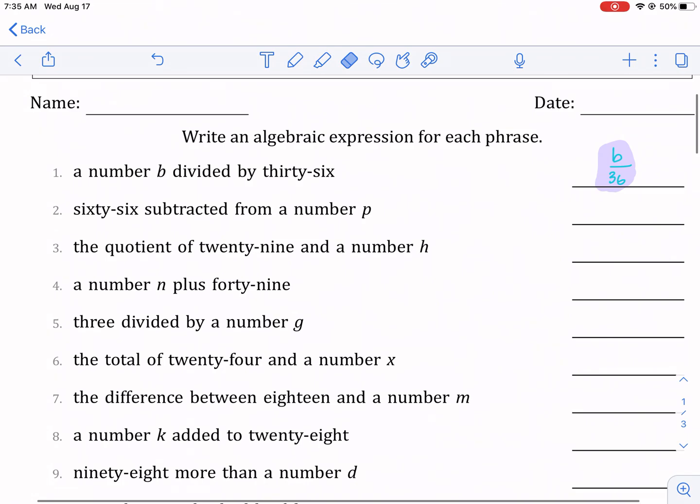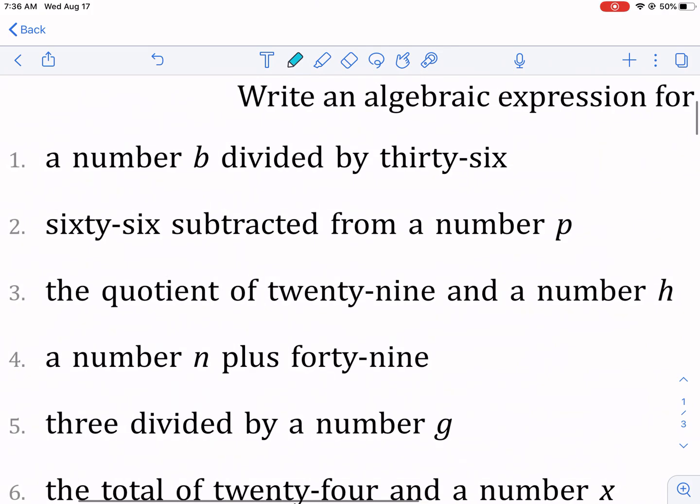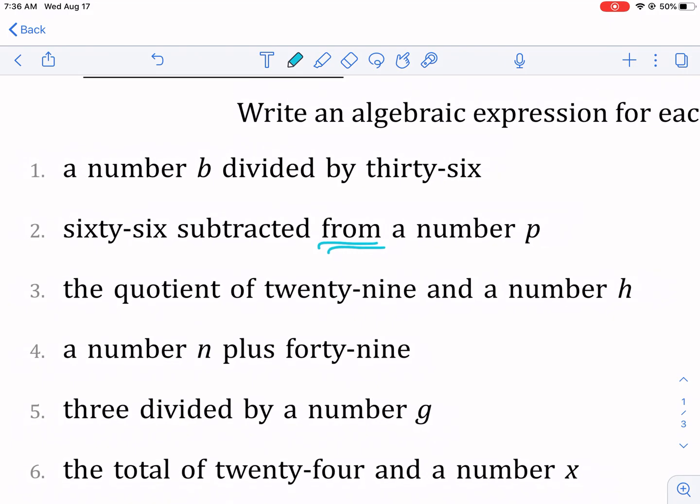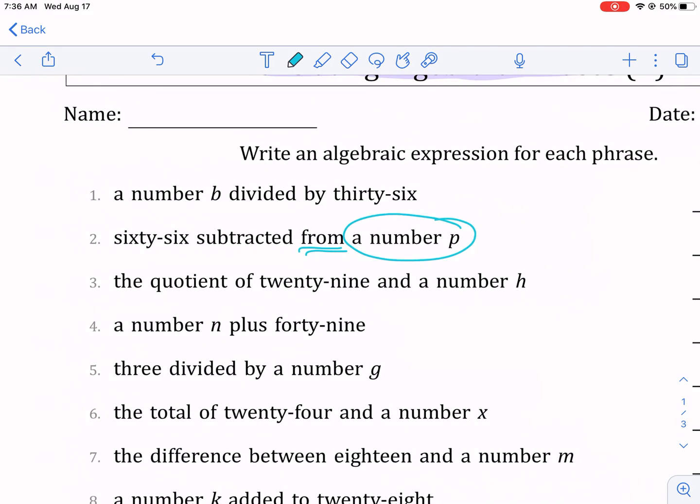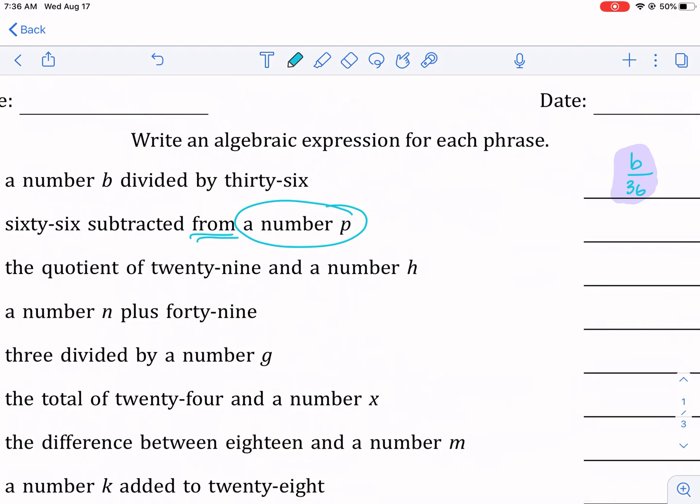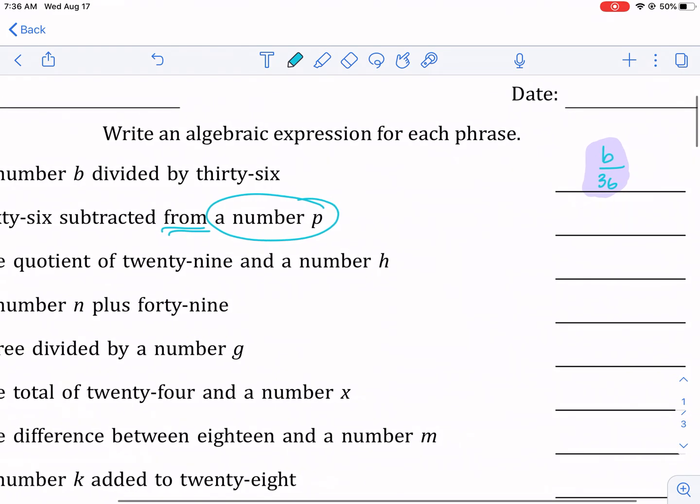Let's move on to number two, which is sixty-six subtracted from a number p. Now this is probably the biggest source of confusion for a lot of my students—when it talks about subtracting or subtracted from. If it says subtracted from, then that means the number after is the one that's doing the subtracting. Let me show you how that looks. If it was 66 subtract a number p, that would look like this.